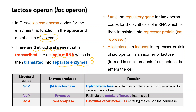The structural genes are lacZ, lacY, and lacA. Enzymes produced are beta-galactosidase from lacZ, permease from lacY, and transacetylase from lacA. Beta-galactosidase hydrolyses lactose into glucose and galactose. Permease helps facilitate the uptake of lactose into the cell, whereas transacetylase detoxifies other molecules entering the cell via permease.